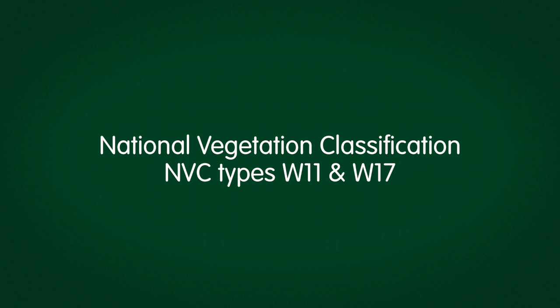The National Vegetation Classification, or NVC, provides a common language in which the character and value of the vegetation of Britain can be understood. The main NVC types for upland birch woods are W11 and W17.